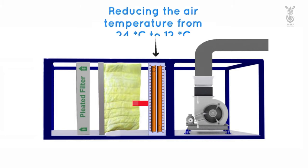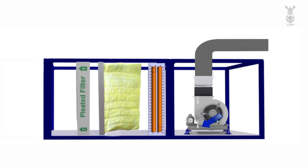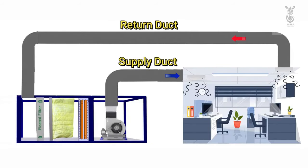Once filtered, the air will travel through the copper coil. While travelling, it absorbs the cooling from the coil and leaves at 18 degrees Celsius. By using the blower, the cooled air is supplied to the room through the supply duct. Again, the hot air returns to the AHU through the return duct. This cycle is a repetitive process. This is the working principle of the Air Handling Unit.